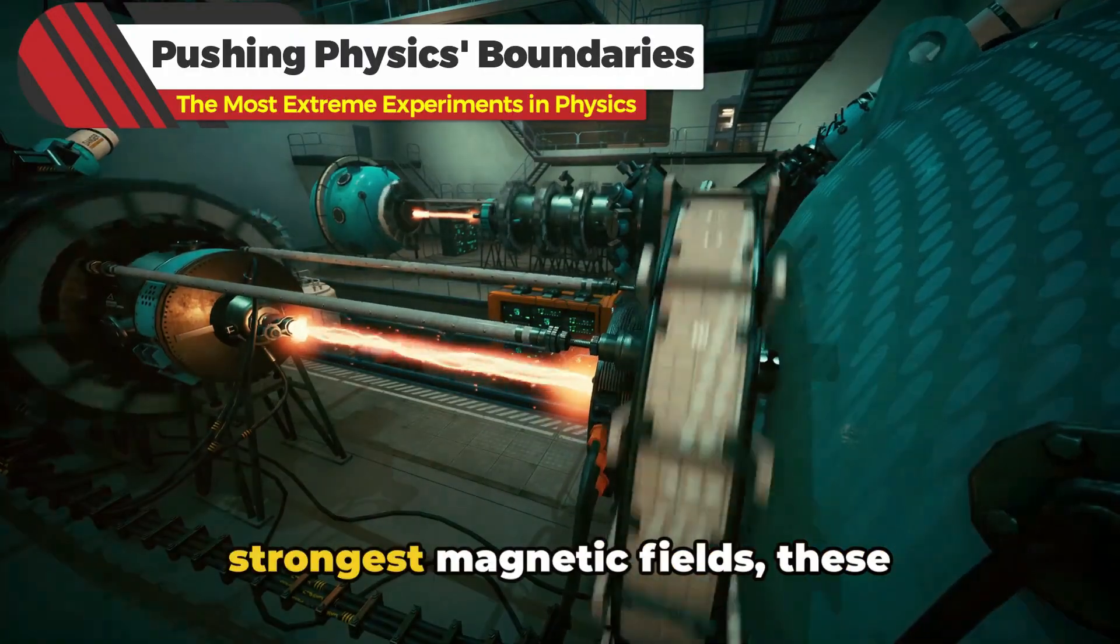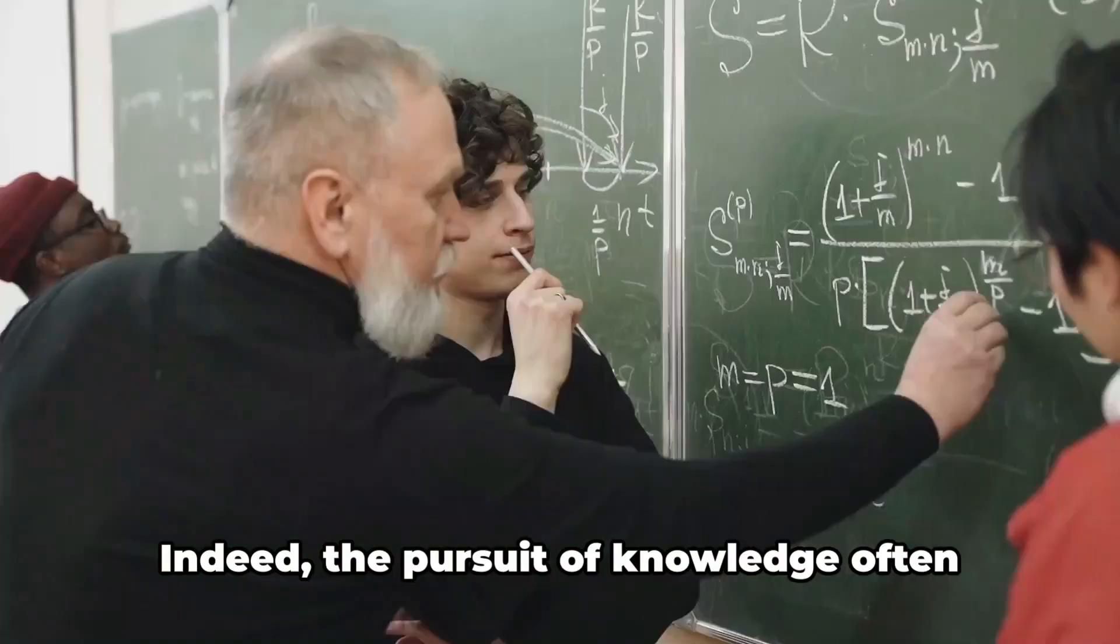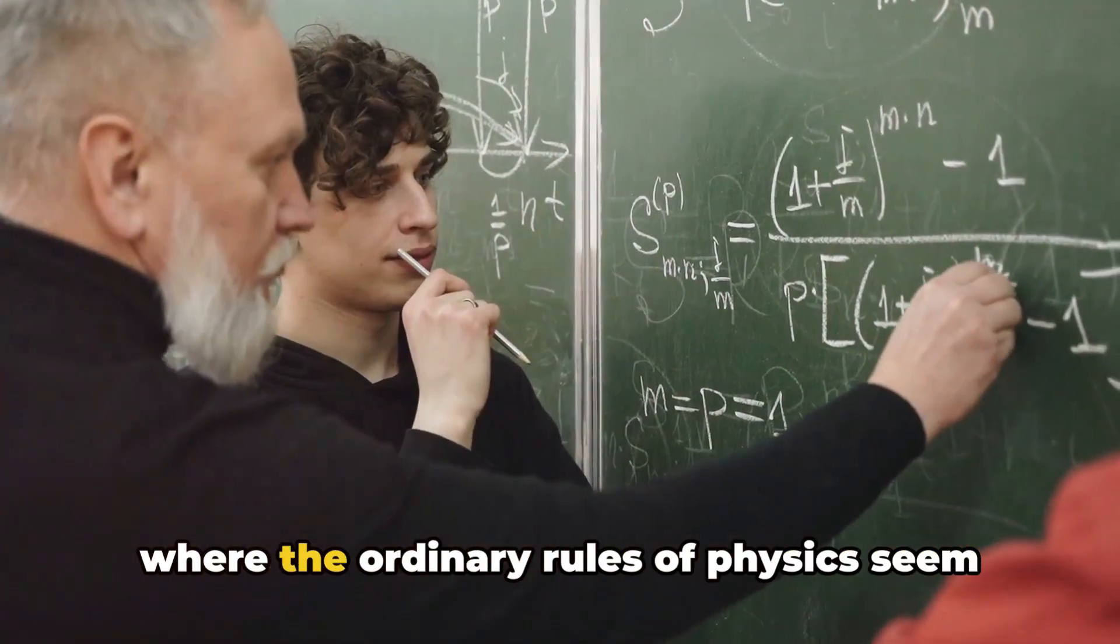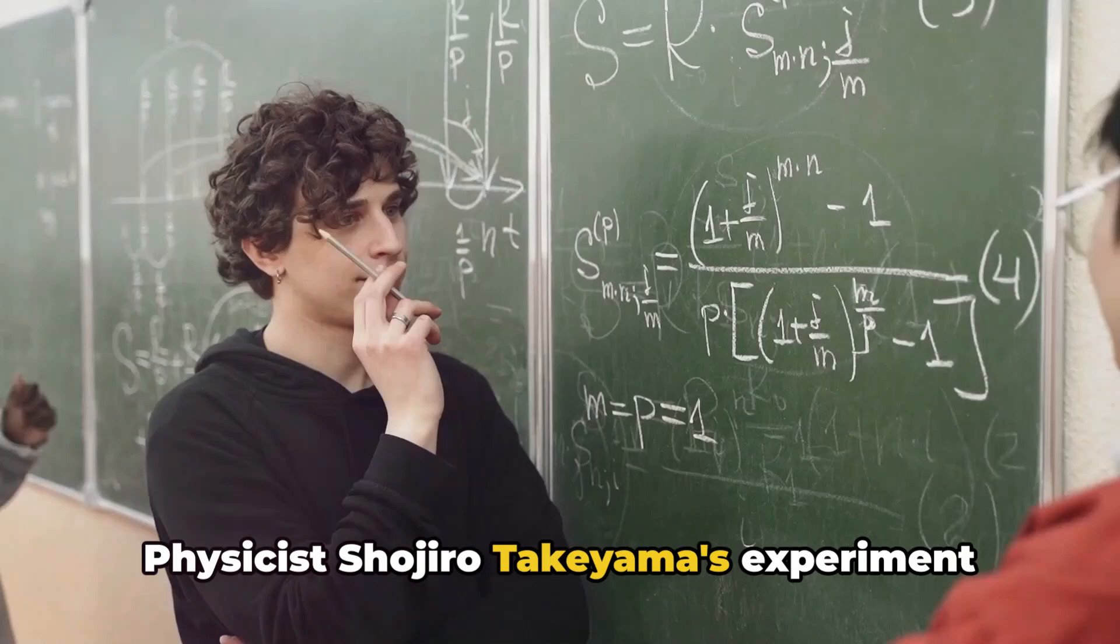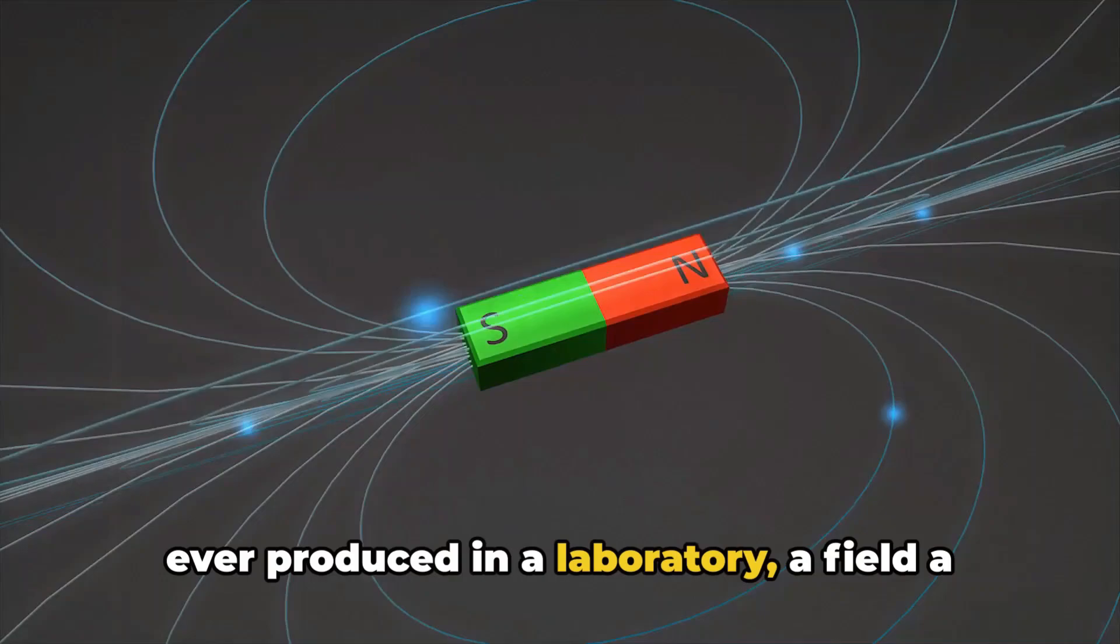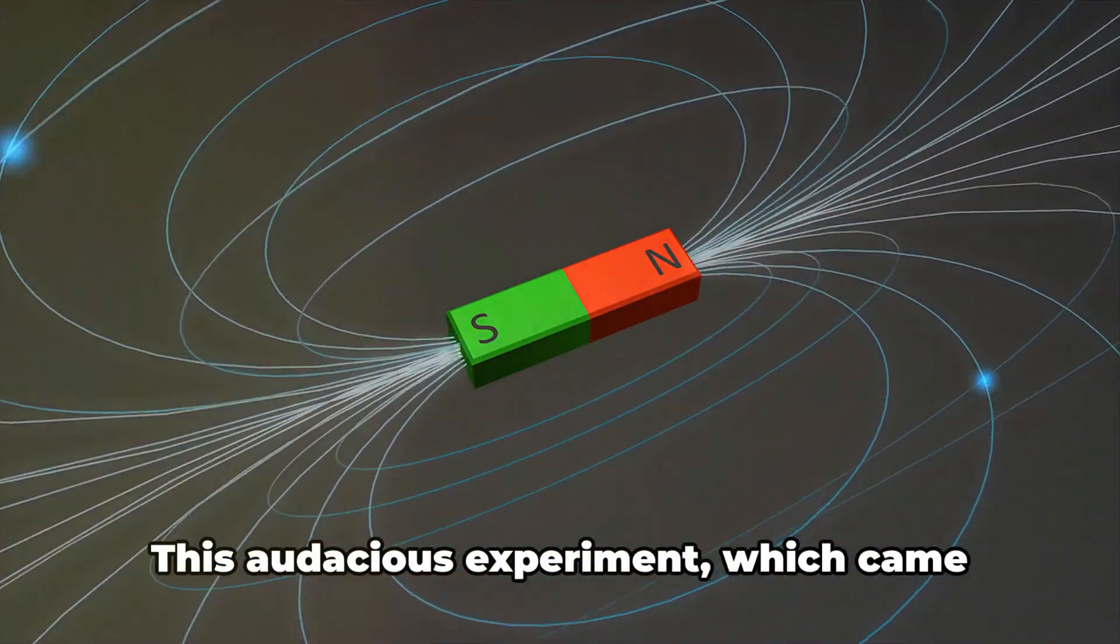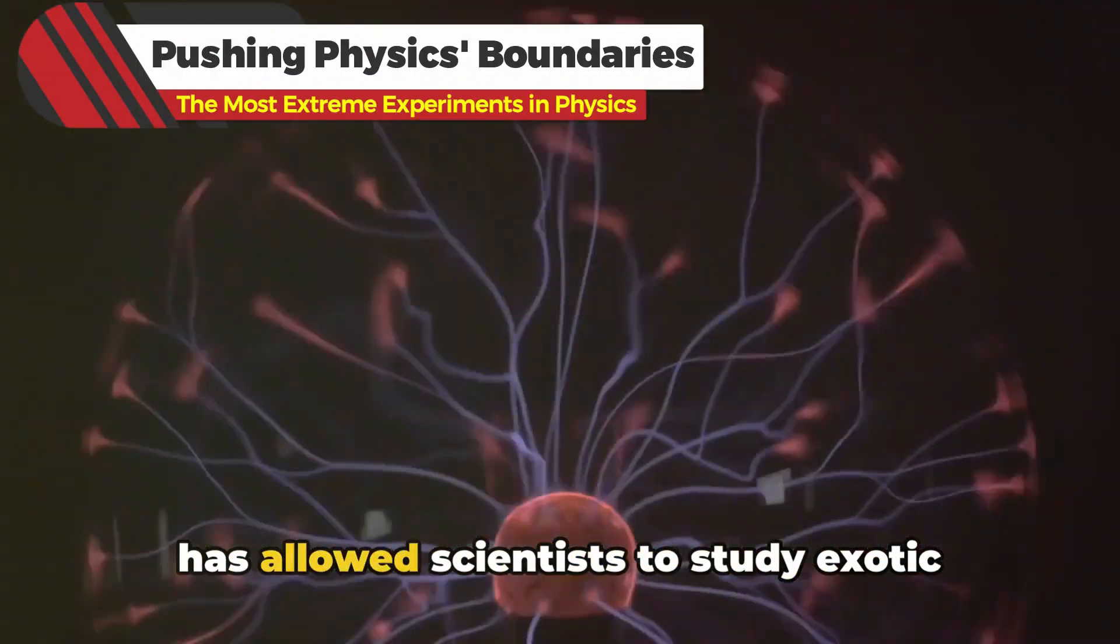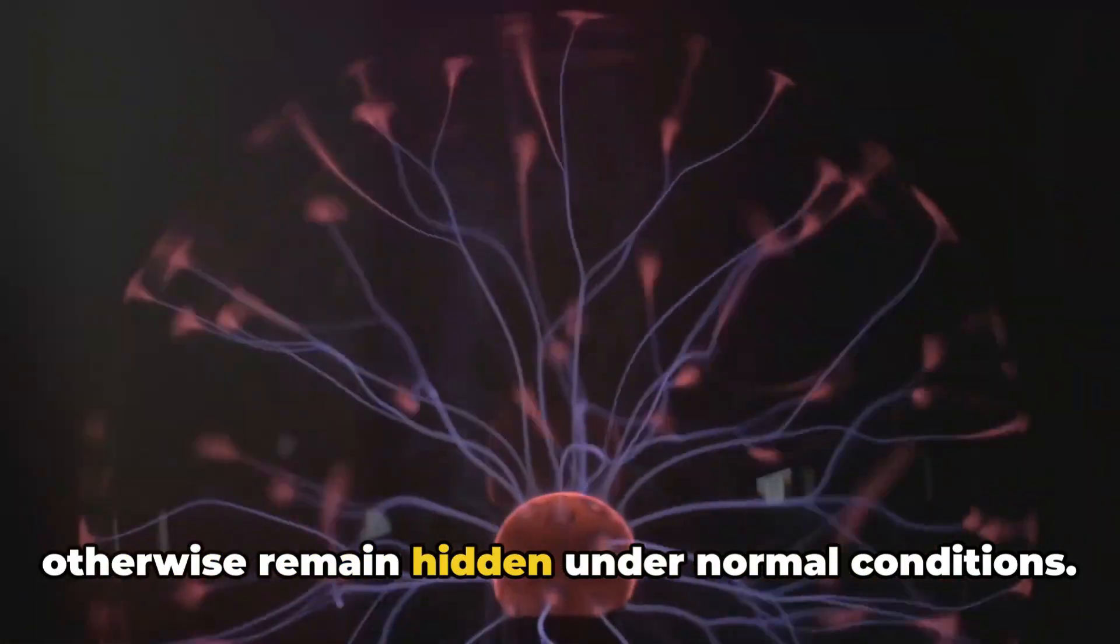From the coldest temperatures to the strongest magnetic fields, these experiments are pushing physics to its limits. The pursuit of knowledge often takes us to the fringes of comprehension, where the ordinary rules of physics seem to bend and warp. Physicist Shojiro Takeyama's experiment in 2018 generated the most intense magnetic field ever produced in a laboratory, a field a thousand times stronger than an MRI machine's. This audacious experiment, which came perilously close to destroying the lab, has allowed scientists to study exotic materials and observe behaviors that would otherwise remain hidden under normal conditions.